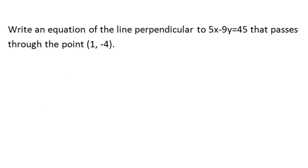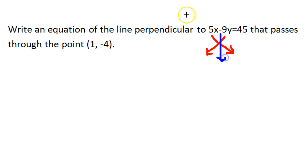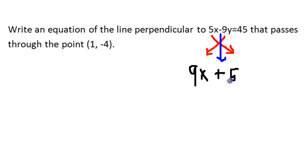Let's do another example. Write an equation of the line perpendicular to 5x minus 9y equals 45 that passes through the point 1 comma negative 4. Once again, we're going to swap the coefficients and change the sign. When we do that, we end up with 9x plus 5y is equal to c.